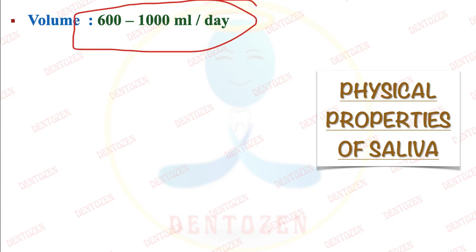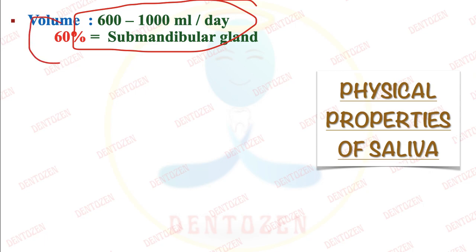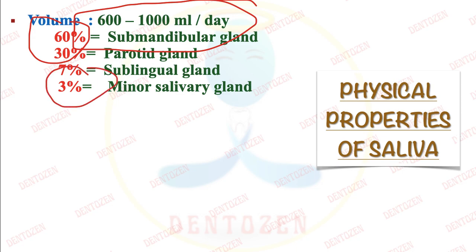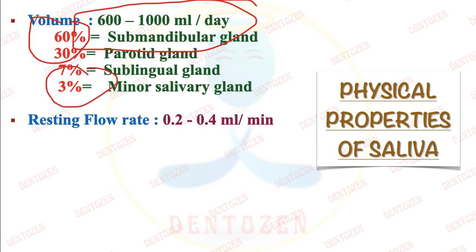The whole saliva has 60% contribution from the submandibular gland, so the submandibular gland is working the most. 30% is from the parotid gland, 7% is from the sublingual gland, and the small minor salivary glands contribute about 3%.